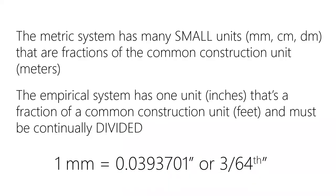One thing that makes the metric and empirical systems different is the following. The metric system has many small units — the millimeter, the centimeter, the decimeter — to describe values that are a fraction of the conventional construction unit, which is the meter. The empirical system has one unit, the inch, that's a fraction of the conventional construction unit, the foot, and so it has to be continually divided to get a value smaller than an inch. For instance, one millimeter is equal to 0.0393 inches, or 3 over 64 inches. Making those equivalencies is a little bit difficult, especially when you have to start using decimals.